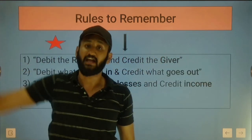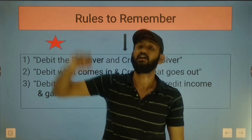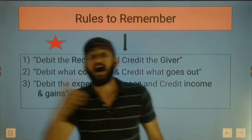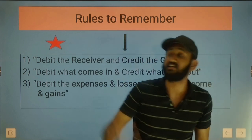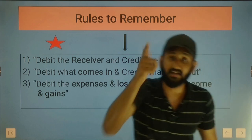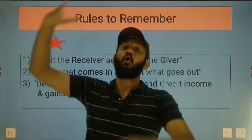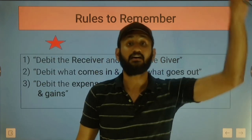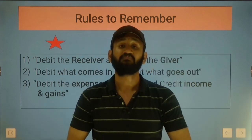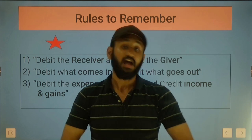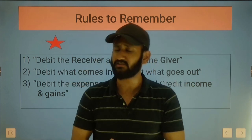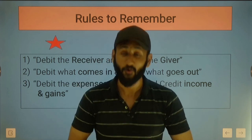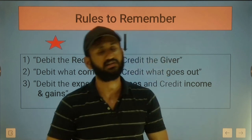Debit the one who receives and credit the one who gives. Real account rule: debit what comes in and credit what goes out. If cash comes in, debit; if cash goes out, credit. Nominal account rule: debit all the expenses and losses, and credit all the incomes and gains. Thank you very much. I hope everything is clear. If you have any doubts, feel free to comment on this video. We will meet in our next class where we will do questions on journal entries.